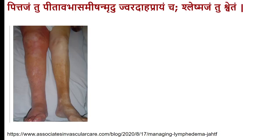Pittaja Shlipada: Pitta-bhasam, moderately yellowish in color, moderately soft, with signs of inflammation, jaradaha (burning). This represents the acute phase of lymphedema with early inflammatory signs. Later it becomes somewhat softer and pale — that is the Kaphaja Shlipada stage.